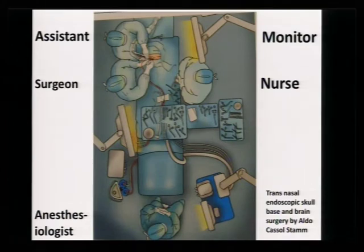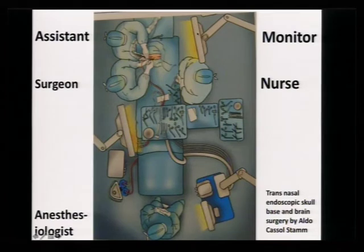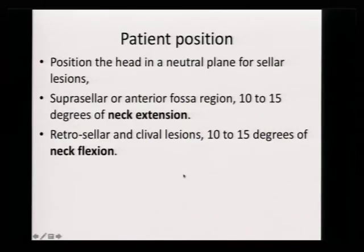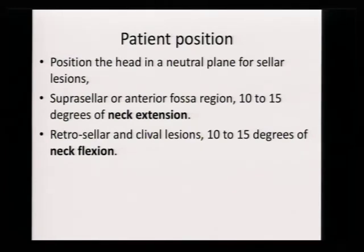Regarding positioning: this is the normal position for the assistant and surgeon; the staff nurse can be here or on the opposite side. Your screen should be ahead of you so you can watch without distortion of your neck. The anaesthesiologist is on the foot side. The patient should be placed so you can watch both nostrils. A common mistake is placing the head far away so you have to lean forward — that is not good. For suprasellar or anterior cranial fossa lesions, go for neck extension.